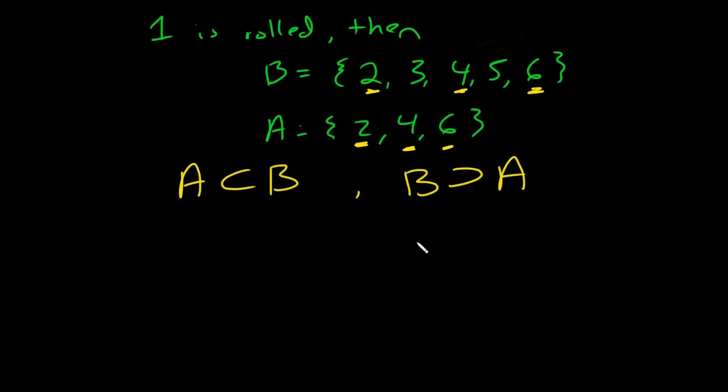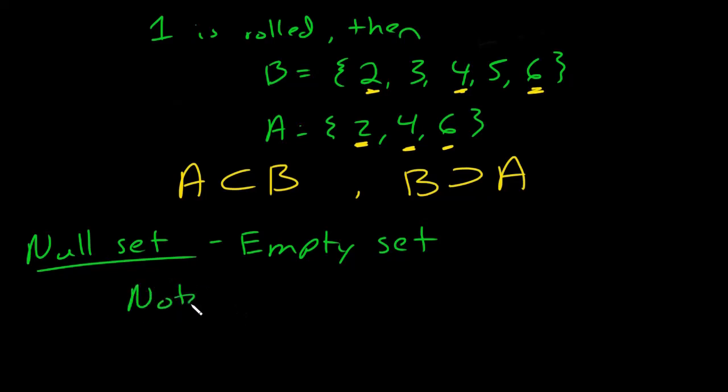One last definition that I want to talk about here in this first video is the null set. The null set, this is also called the empty set. And notation-wise, you will see this written as an O with a line through it, or sometimes you'll see it written using set curly brackets, but then there's nothing in between.